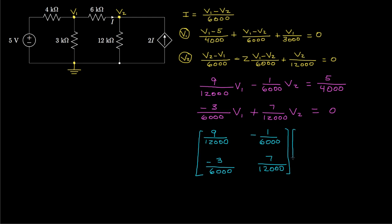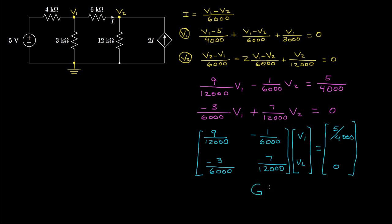The vector [V1, V2] equals [5 over 4,000, 0]. We can think of this as the matrix G times the vector V equals I, so V equals the inverse of G times I.